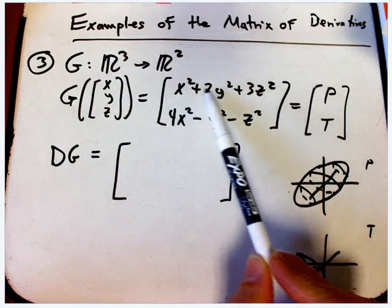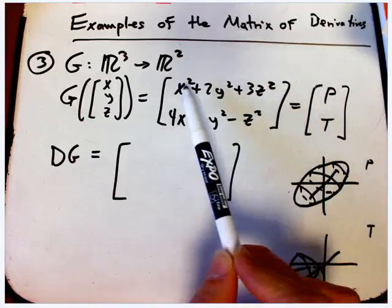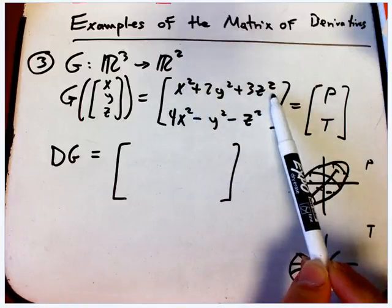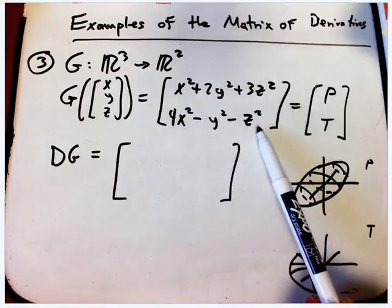And it's going to be x² + 2y² + 3z² for the first coordinate of the point in R² that we're calculating. That's the function we had in example one. And then a new one, 4x² - y² - z² is the second coordinate.